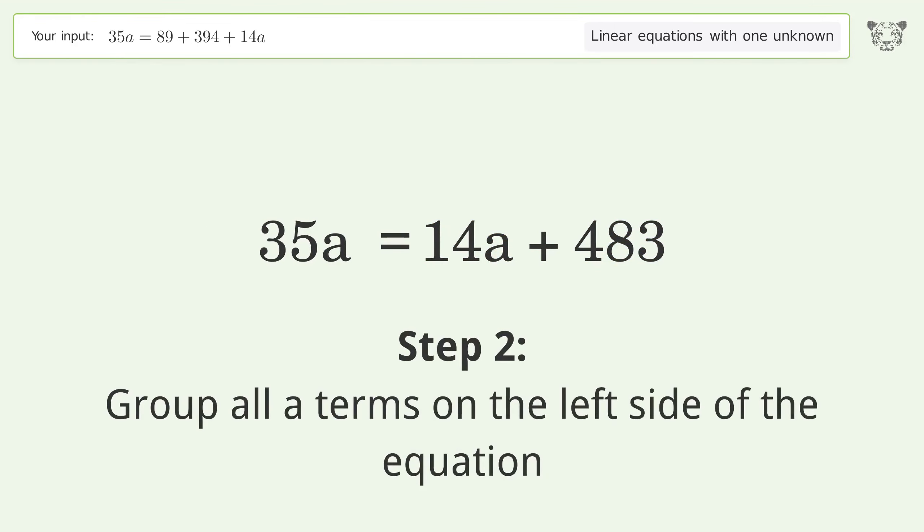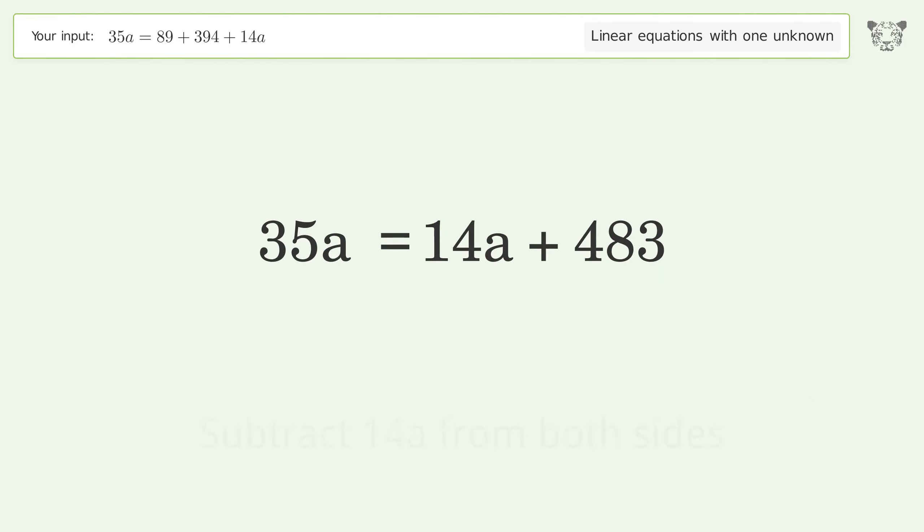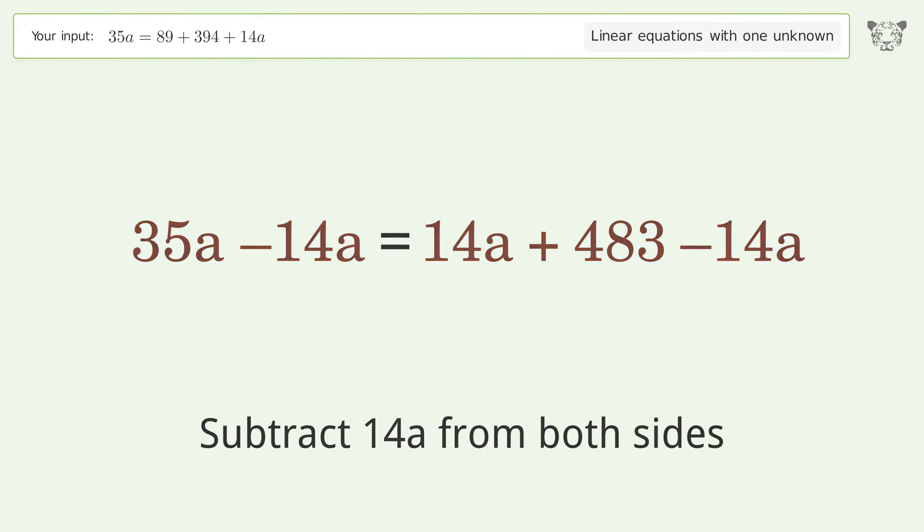Group all A terms on the left side of the equation. Subtract 14A from both sides. Simplify the arithmetic.